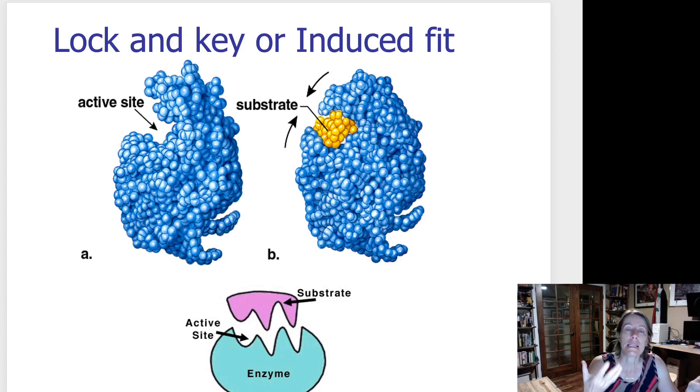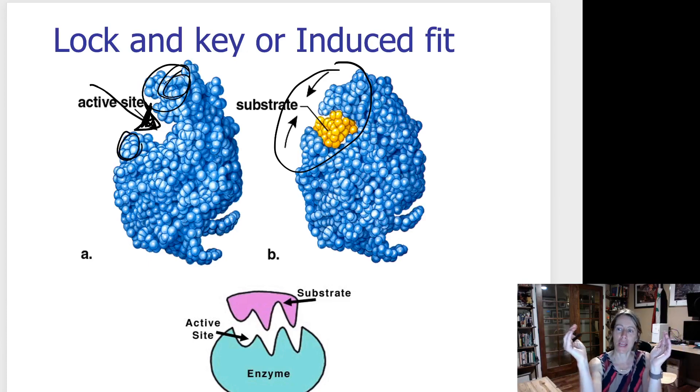This lock and key model is a little old now. Now we know that when the substrate fits into the enzyme's active site, the enzyme does actually kind of wiggle and change and kind of grab on to the substrate a little bit tighter. You can see here how when the substrate sits into the active site, the sides - this area and this area of the protein - kind of change their folding a little bit and encase the substrate to make it a really tight fit.